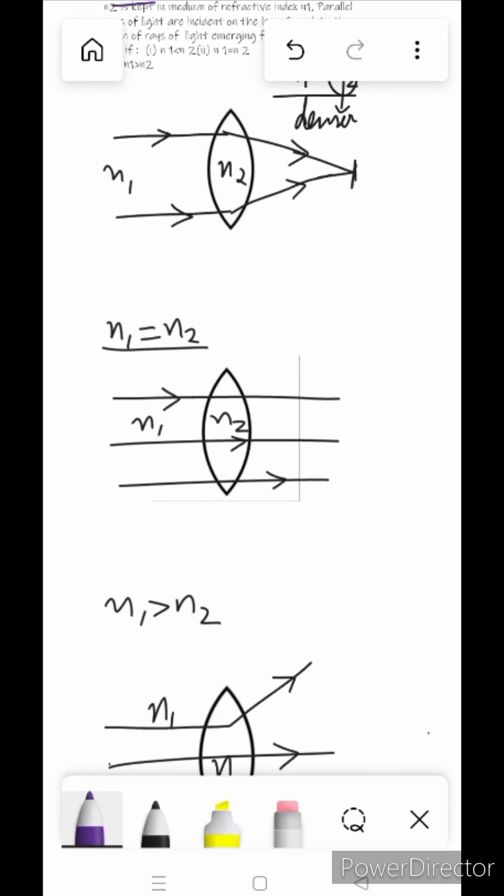So now we have understood in these three situations that when the ray of light moves from rarer to denser, it will converge. When it's in the same refractive index, it will be straight and parallel. And when it goes to rarer, it will diverge.